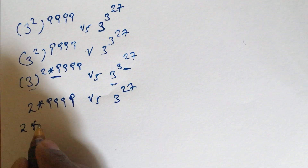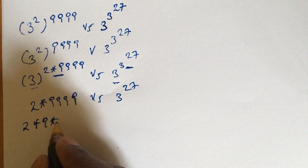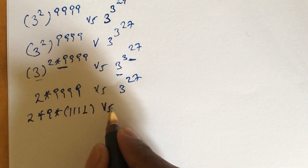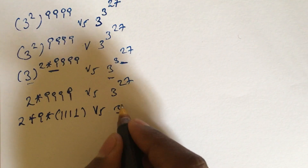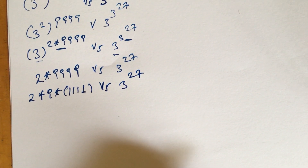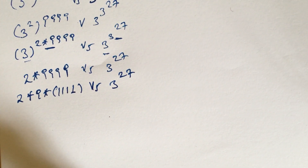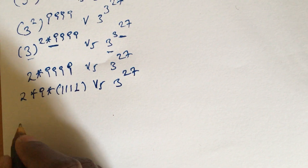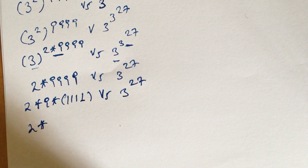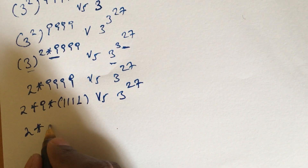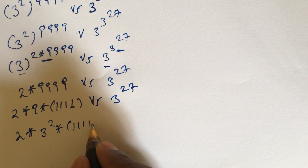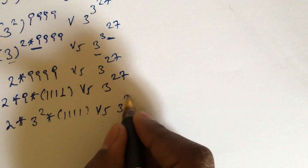So we compare 2 times 9^9^9 versus 3 to the power of 27. We can write 2 times 9^9^9, and note that 9^9^9 equals 3 squared to the power of 9^9, which gives us 3 squared times 9^9 on the left side, versus 3 to the power of 27.